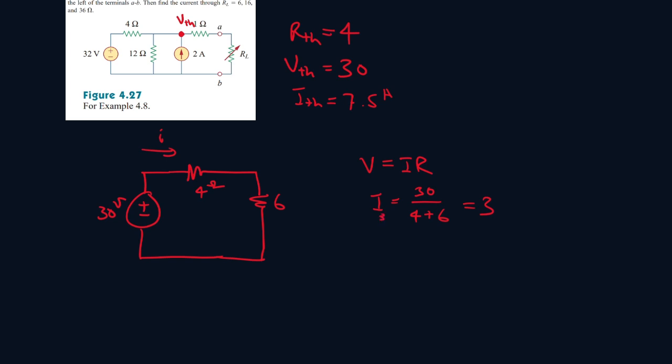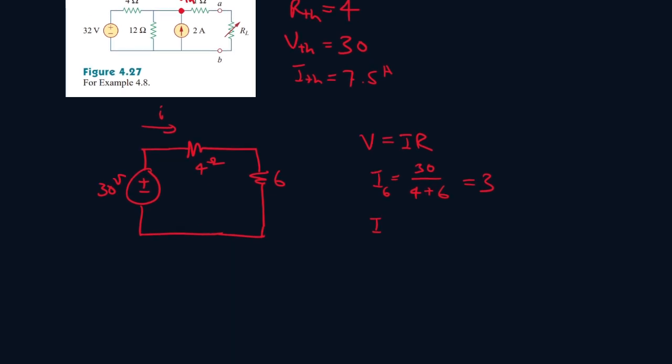So let's call this I6. Then what about I16. It will be 30 all over 4 plus 16. So that gives you 1.5.